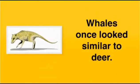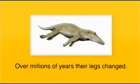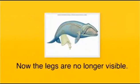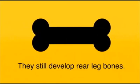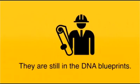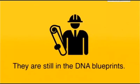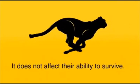An example is the whale. Whales once looked very similar to deer, and today they are very different. Over millions of years their legs have changed — now their legs are no longer visible. Other structures have come along to help in their aquatic environment. Whales still have rear bones, but we cannot see them, even though they are not needed. And the plans for rear legs are still included in the whale's DNA blueprints. It does not affect their ability to survive.